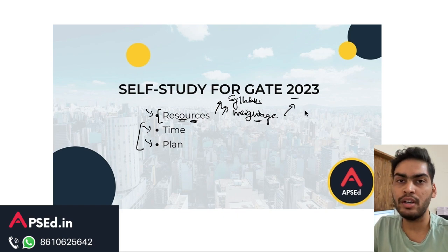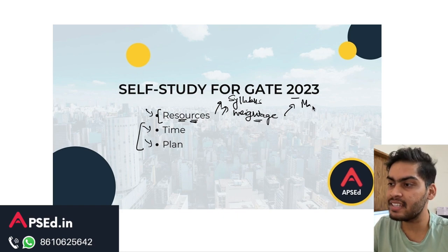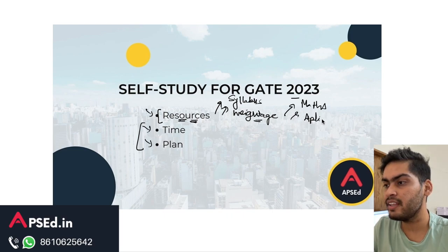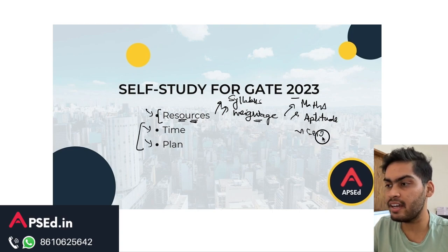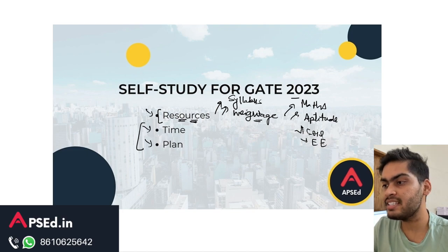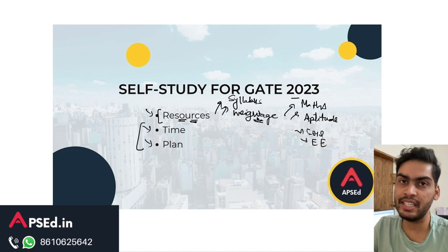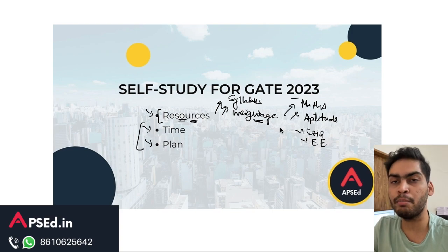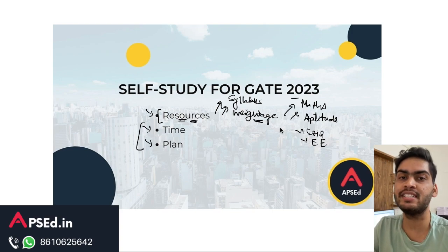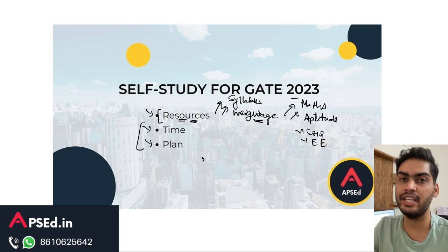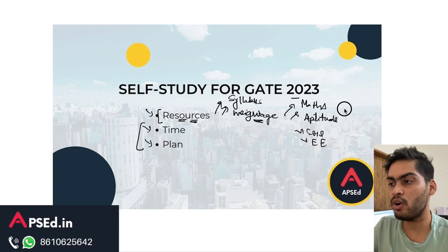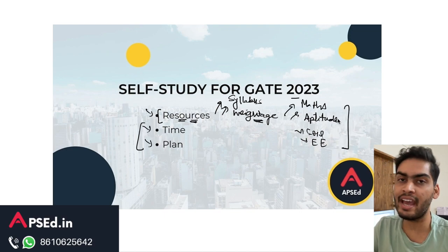For example, if you are preparing for Civil, then subjects like Maths, Aptitude, Soil, and Environment are on very high weightage. You need to understand this weightage and plan your preparation accordingly. If you are spending too much time on consistently low-weightage subjects, then you are missing out on marks that you could get easily.